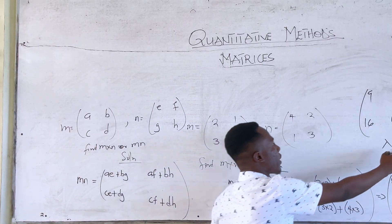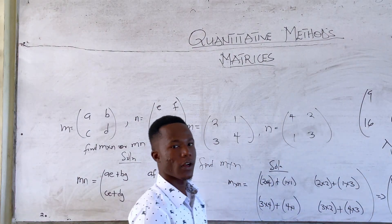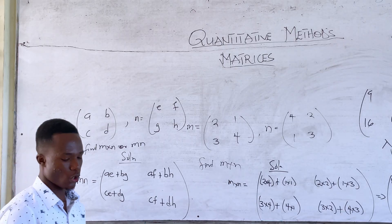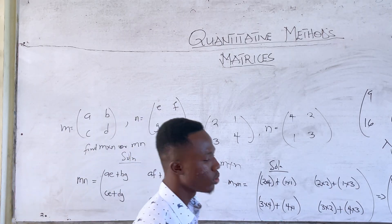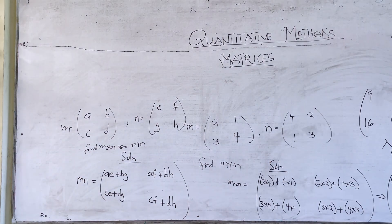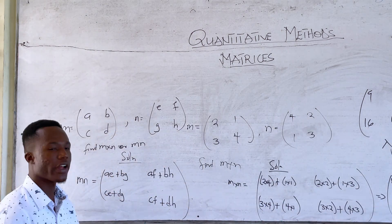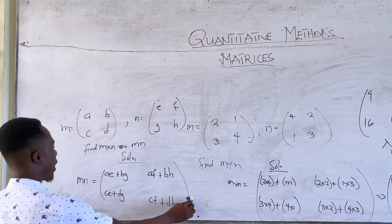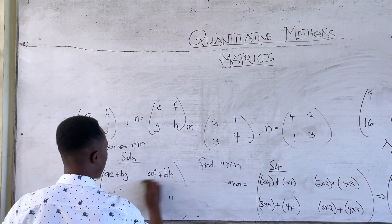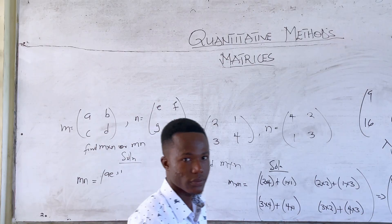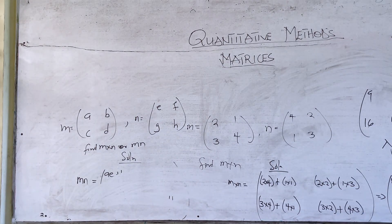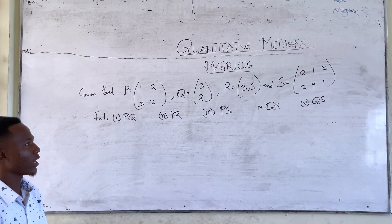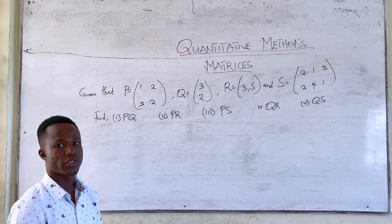And so this is your final answer. That is how we do the multiplication of 2×2 matrices or any other type. So we are going to solve another question, and I will give you one example to try. Now we are going to solve a question on multiplication of matrices.